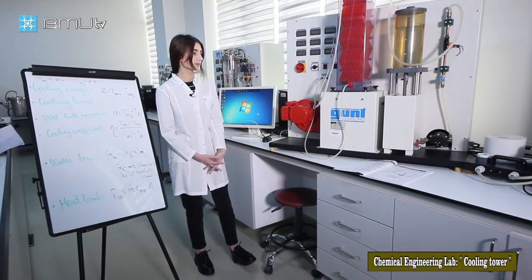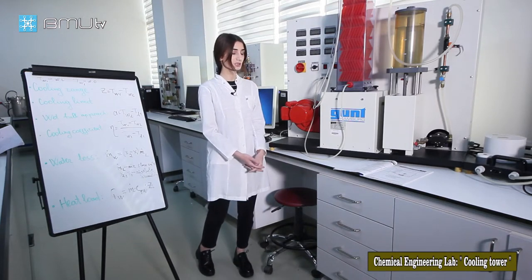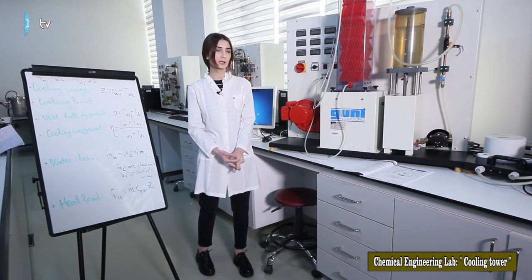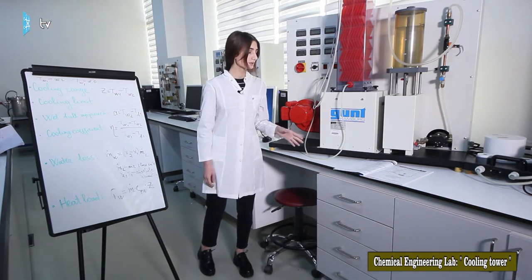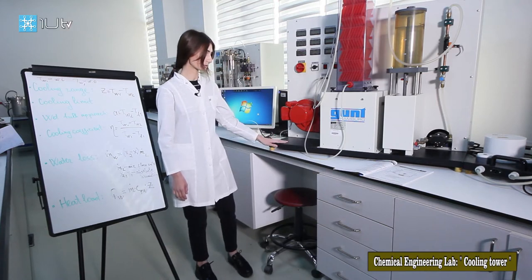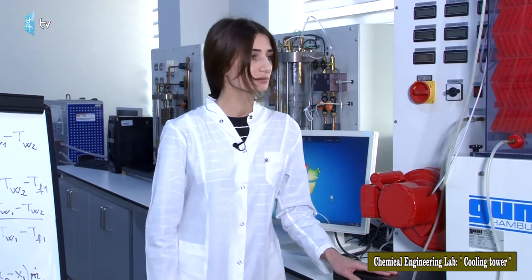This unit gives us information about some principles and main components of the forced air ventilation wet cooling towers. Now let's start with some main components of the unit. Let's start firstly with the cooling column.